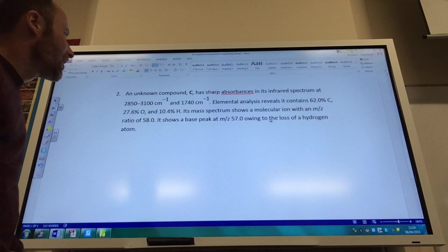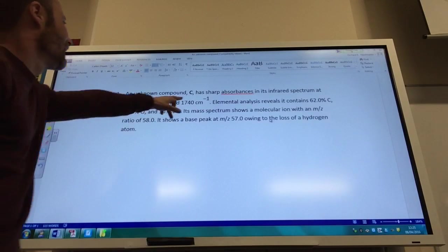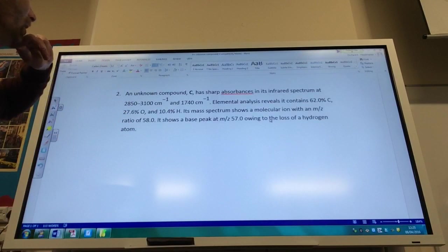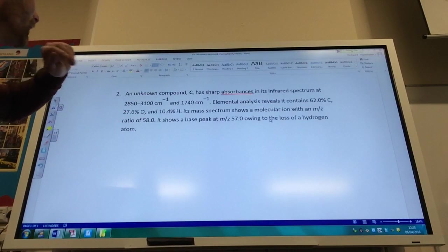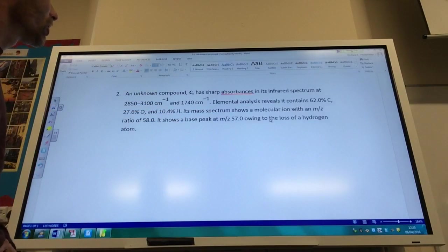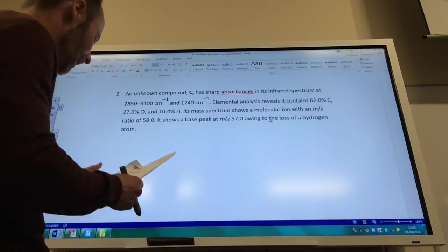Okay, so let's do one more example. We've got another unknown compound, we've got a sharp absorbance here and a peak here at 1740. Elemental analysis we've got as well, a molecular ion, and we've also got a base peak at 57 which shows the loss of a hydrogen atom. So let's try and put all this together. Again, always do your elemental analysis first.